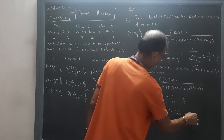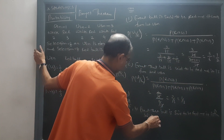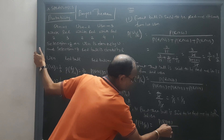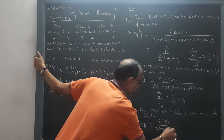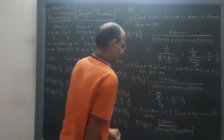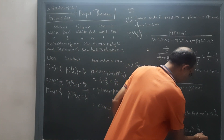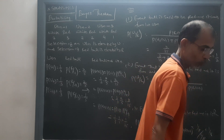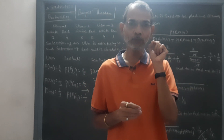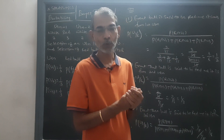Similarly, for the third point — the ball is red and it is from the third urn — we compute P(U3|R) = P(R ∩ U3) divided by [P(R ∩ U1) + P(R ∩ U2) + P(R ∩ U3)] = 1/15 divided by 6/15, so the answer is 1/6. Now, this is called Bayes' theorem: whenever a conditional event is given and the reverse conditional event is to be found out, you use Bayes' theorem.